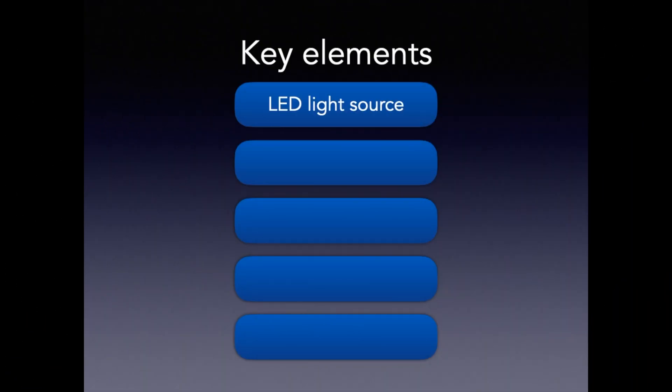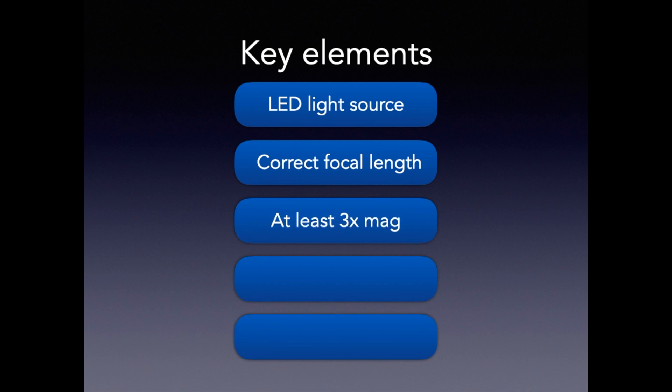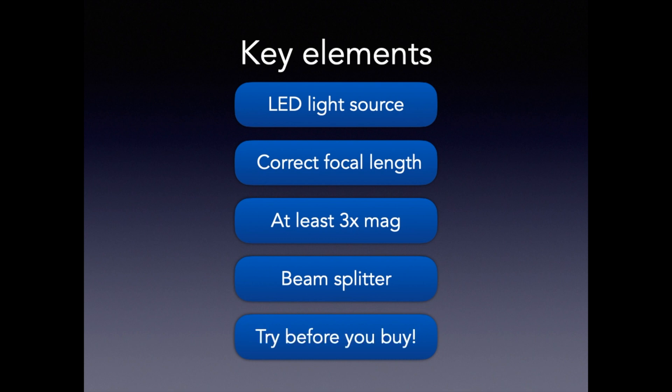So to recap, when looking for a microscope: first, an excellent light source, preferably LED — this will be super bright. Make sure the focal length is correct for your body height so you can work comfortably. Root canal treatment can take a long time and you want to be relaxed and comfortable during that. You'll need at least three times magnification, or a variable focusing magnification. A beam splitter is excellent because this allows you to document cases with video and cameras, or have an observer scope for your assistant. And if possible, try before you buy.